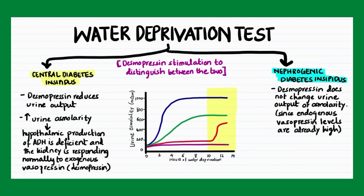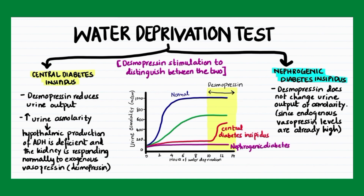This graph shows the changes in urine osmolality before and after desmopressin administration. The yellow shaded area shows the change in urine osmolality after administration. In central diabetes insipidus, urine osmolality shows a sudden rise since hypothalamic ADH production is deficient but the kidneys are functioning normally. In nephrogenic diabetes insipidus, there is no change in urine osmolality since the kidneys are not responding to antidiuretic hormone. In primary polydipsia, desmopressin also does not cause any change in urine osmolality.